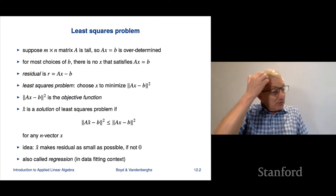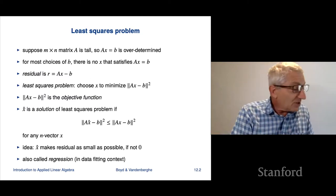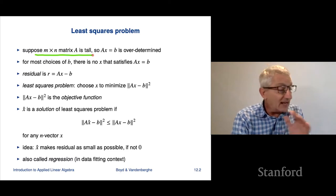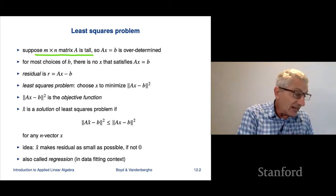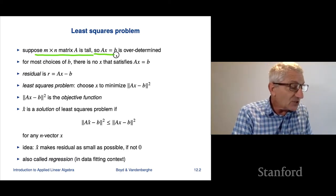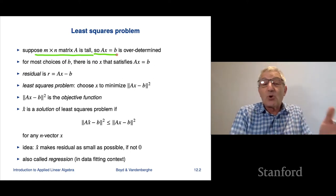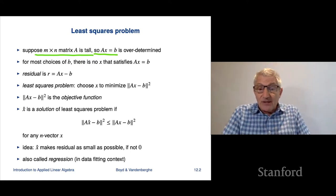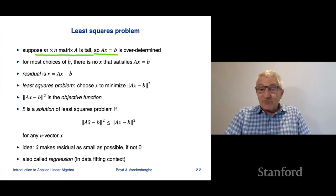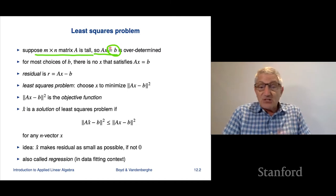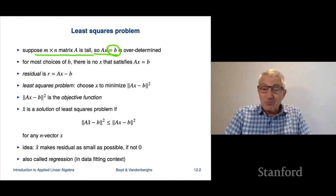Here's the least squares problem. We start with an M by N matrix A, which is tall — that means M is bigger than N. That means the set of equations Ax equals B is overdetermined: you have more equations than you have unknowns. And that implies that for most choices of B, the right-hand side, there is no solution — there's no x that satisfies Ax equals B.